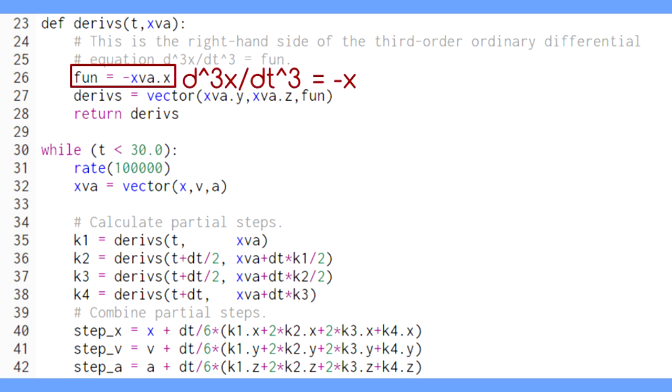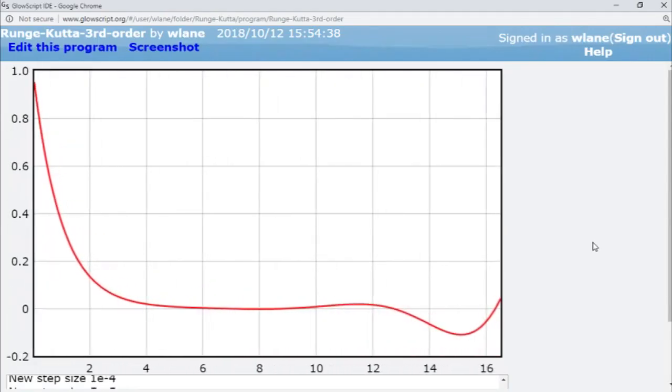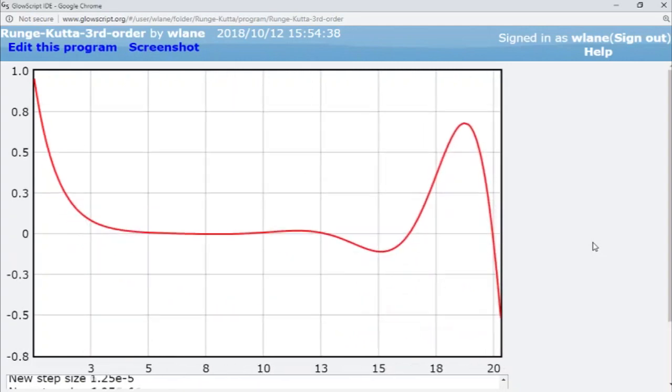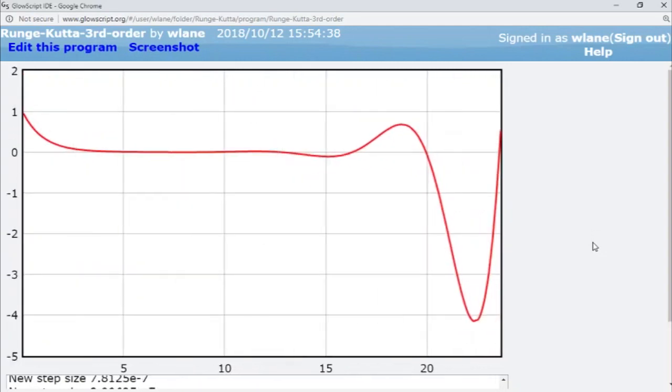Let's try out our third-order Runge-Kutta program with the third derivative equal to the negative of the position. As you can see, with a higher-order differential equation, the changes produced in the function are more dramatic.